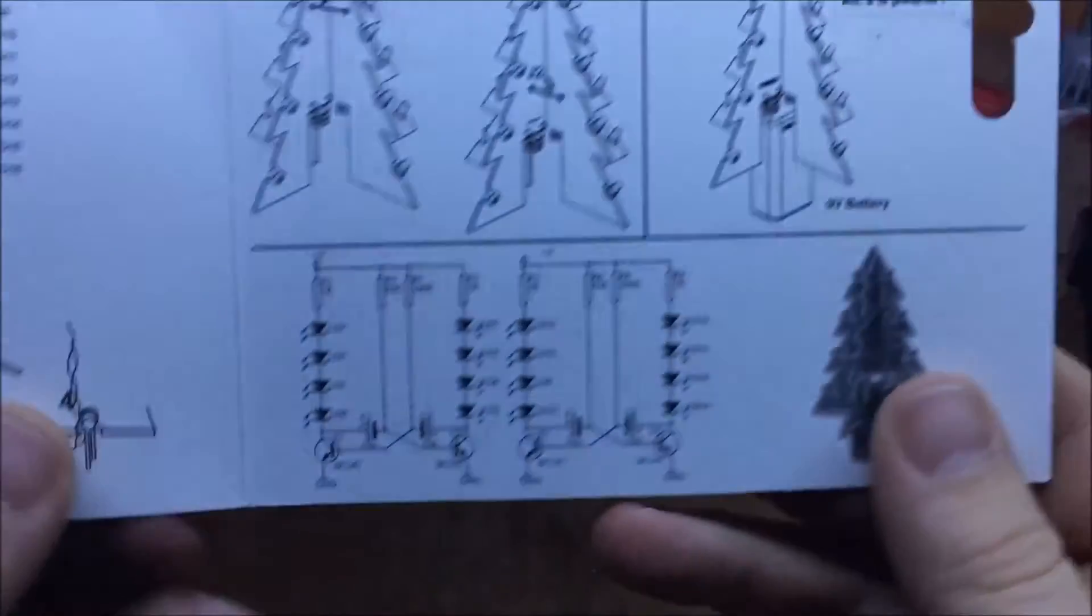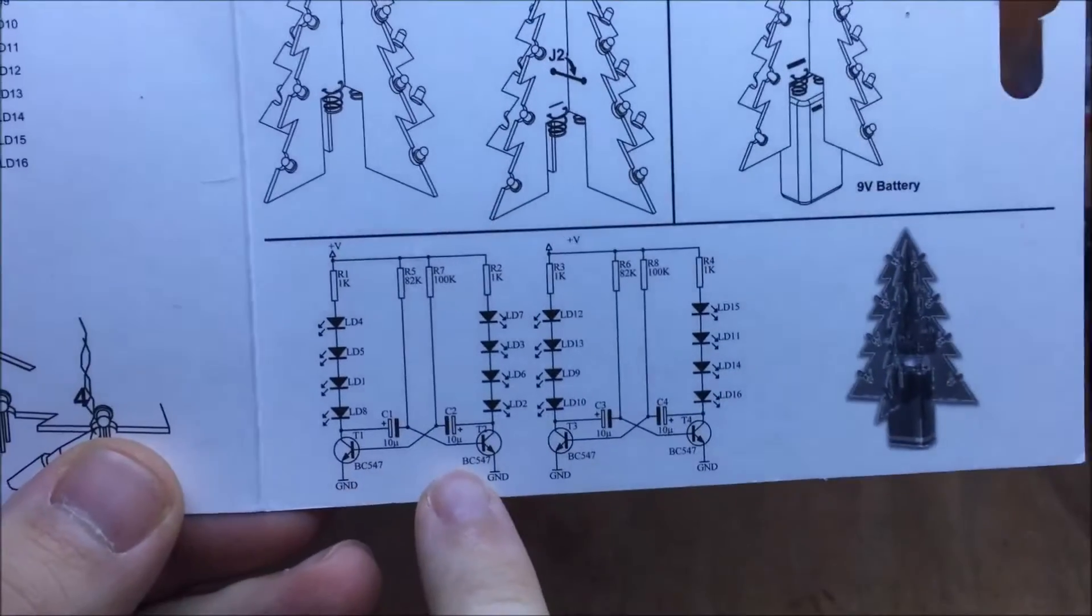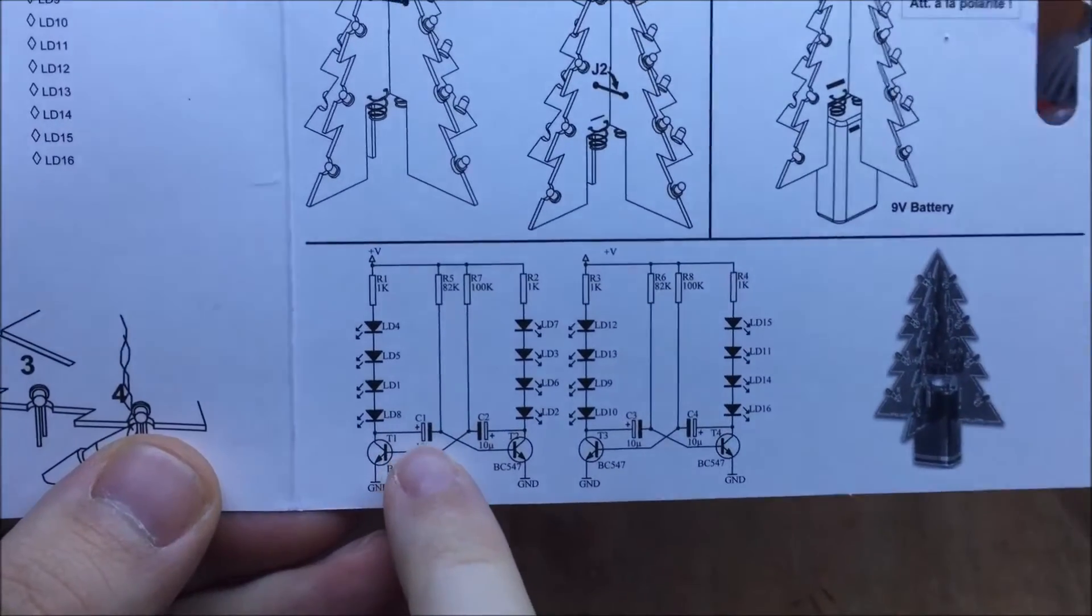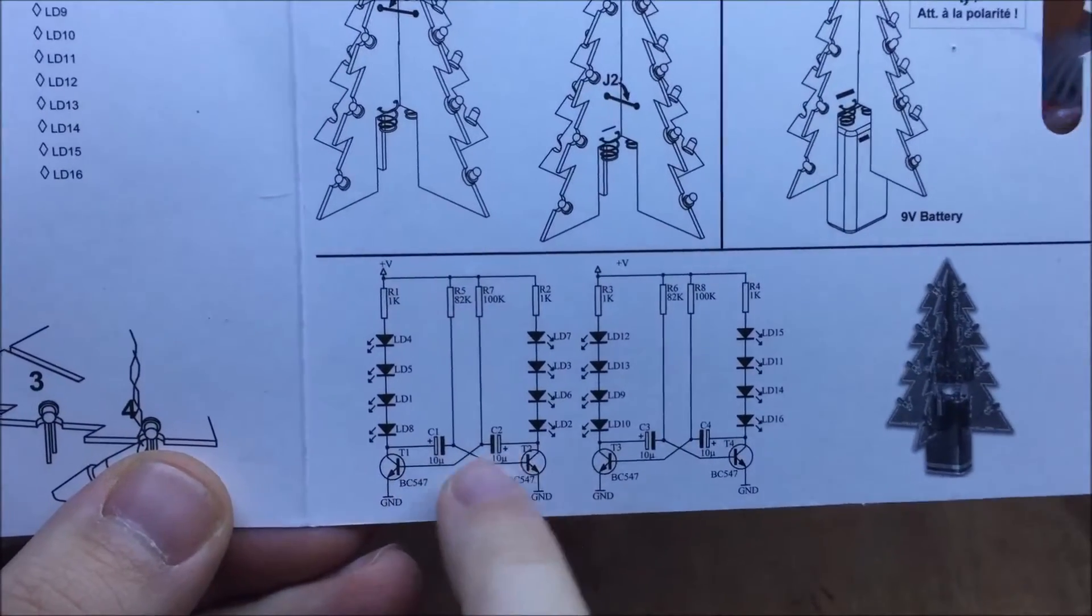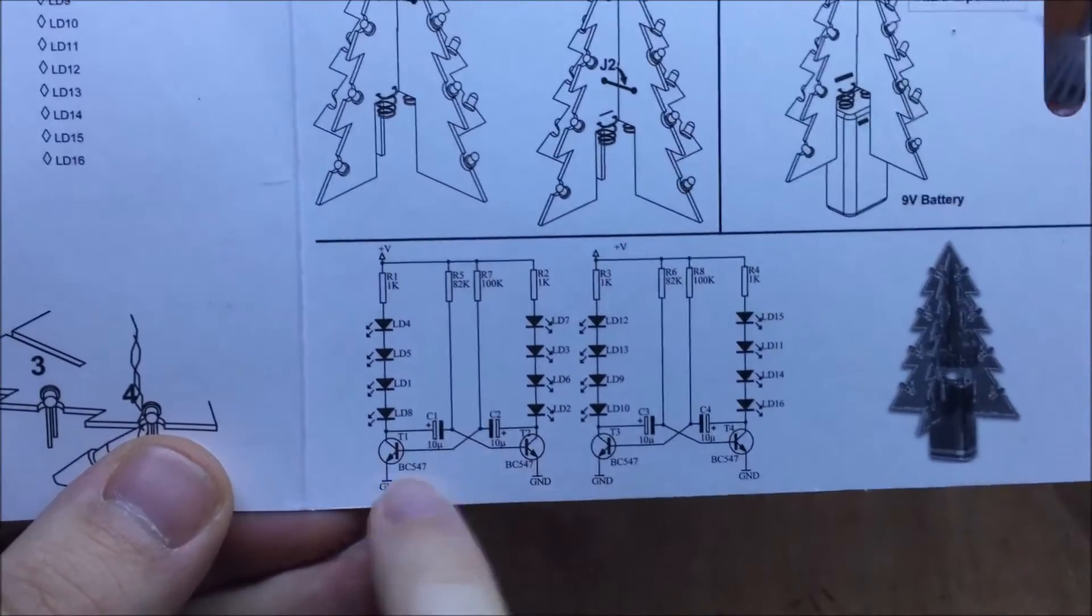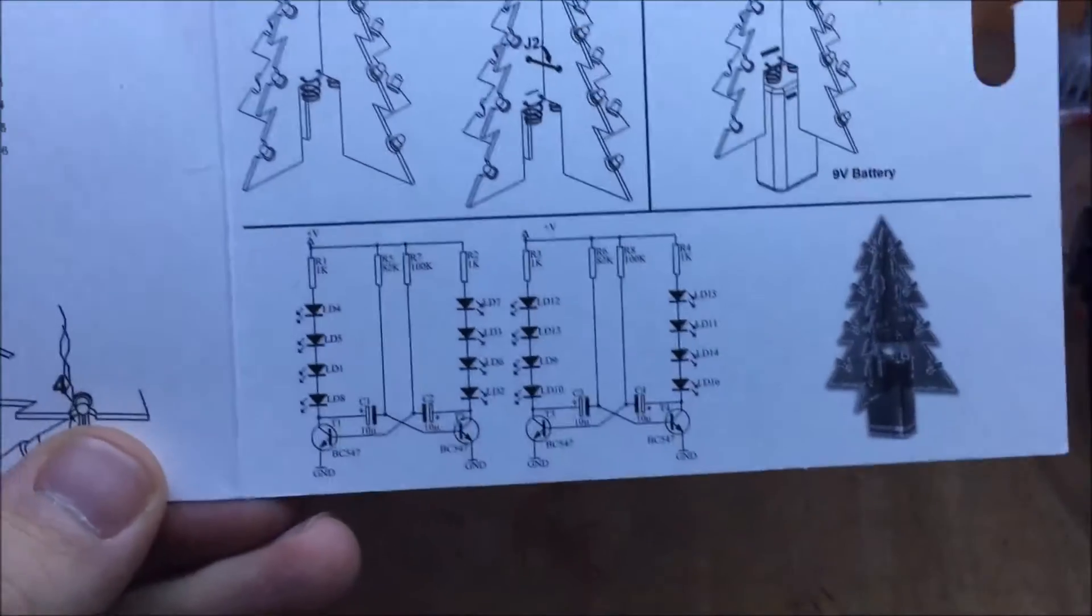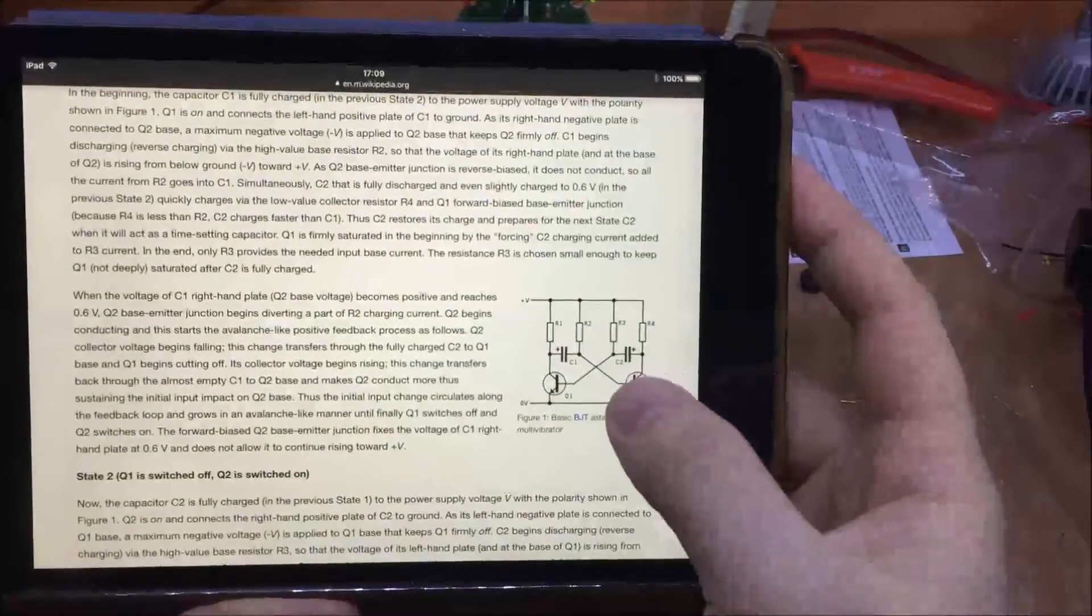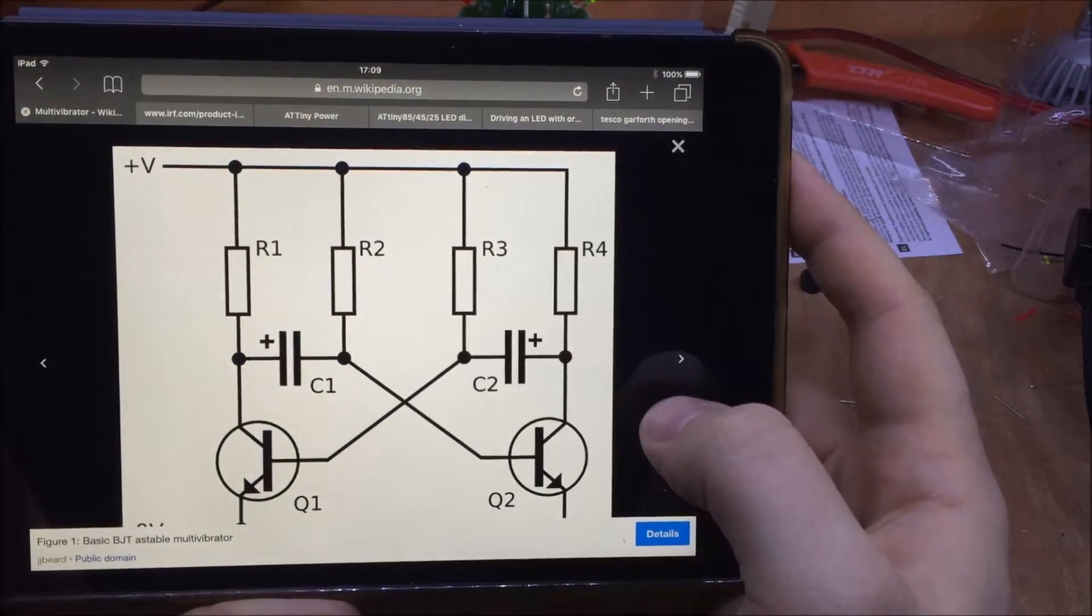Okay, looking at the schematic for this Christmas tree, this I believe is an astable multivibrator, or an oscillator. These capacitors charge up and discharge through the bases of these transistors oscillating one side to the other. We've done this twice, once on each PCB. And there we can see the same circuit on Wikipedia.